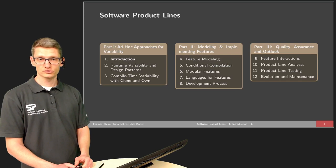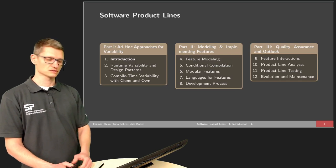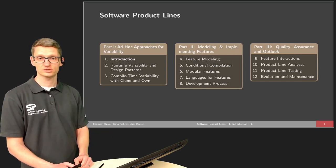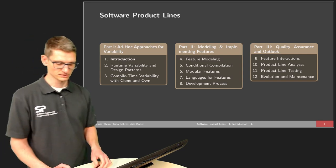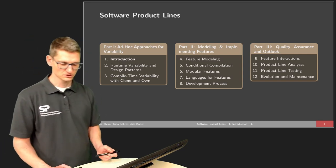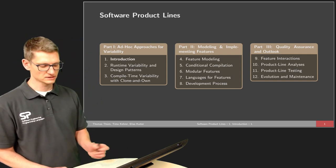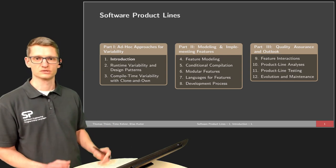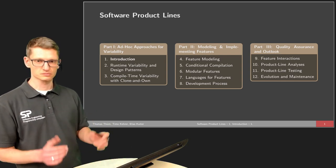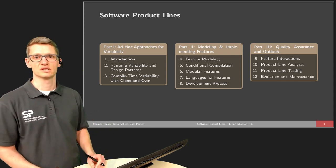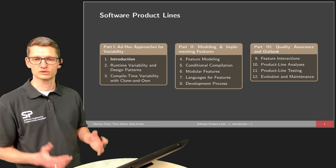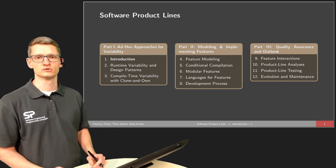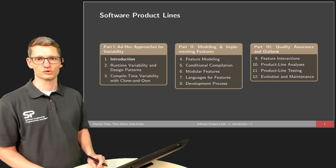To give you an overview, this is a whole lecture series supposed to be given as a university course. We split this up into several parts. In the first part, in the first three lectures, we will talk about ad hoc approaches to variability — what people typically do if they don't know anything about Software Product Lines.